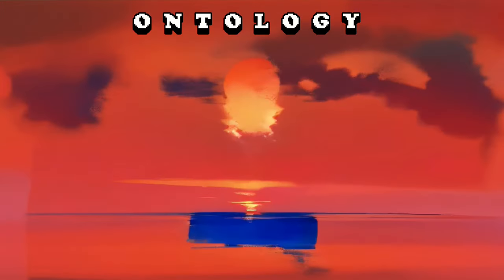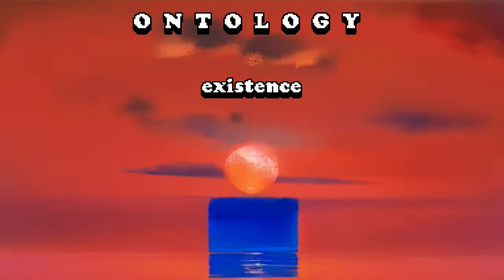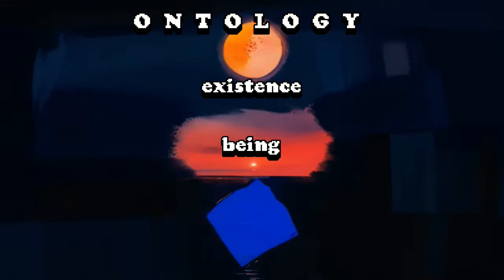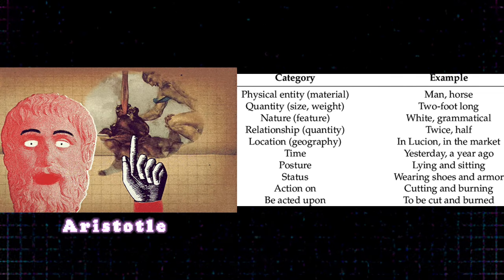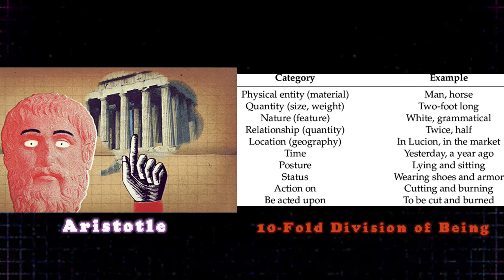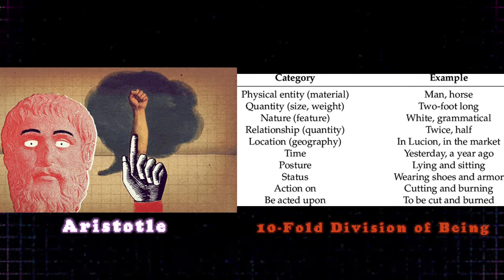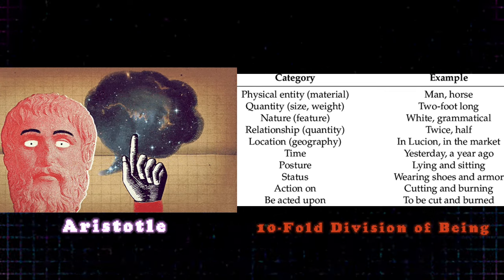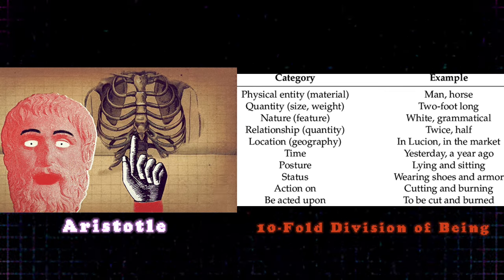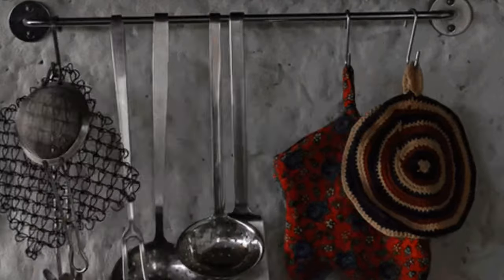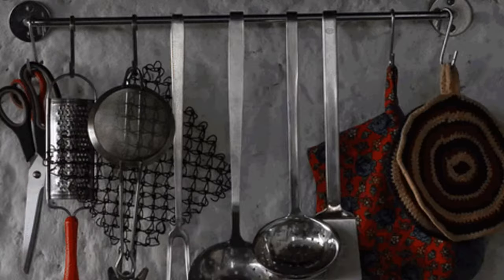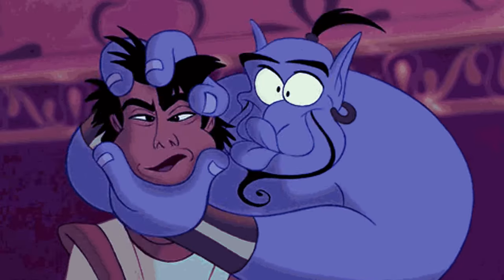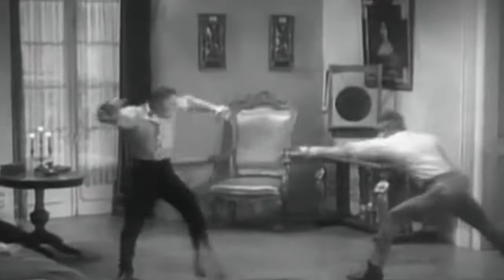Ontology is the philosophical study of existence, of being, of what is. It's been around since Aristotle categorized reality into 10 fundamental types and features what all entities have in common and how they are divided into basic categories of being. Every time you use a taxonomy, a classification system, or even just language itself, you're engaging with ontology. It's the DNA of meaning-making.